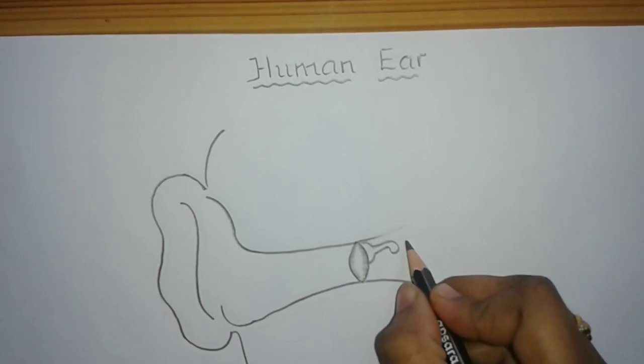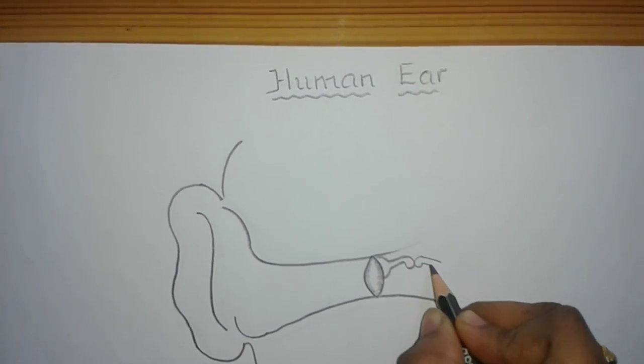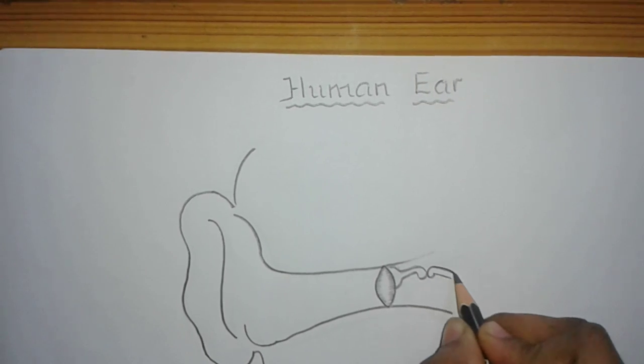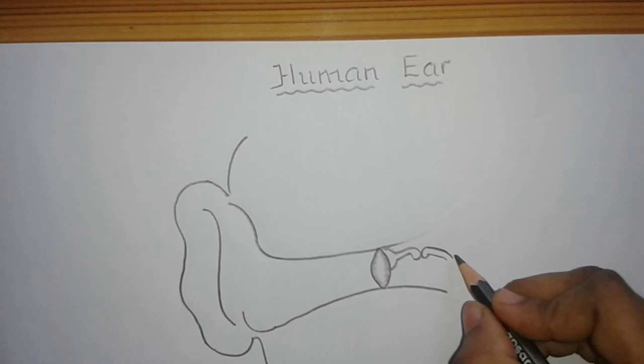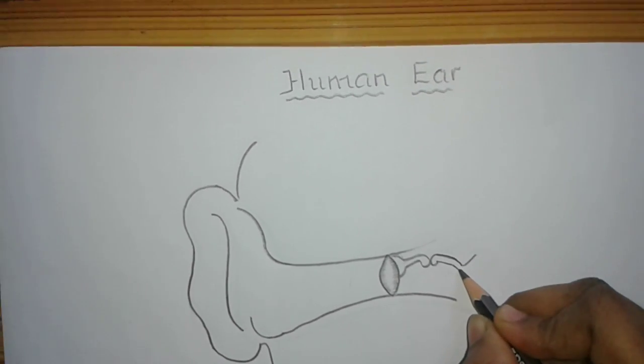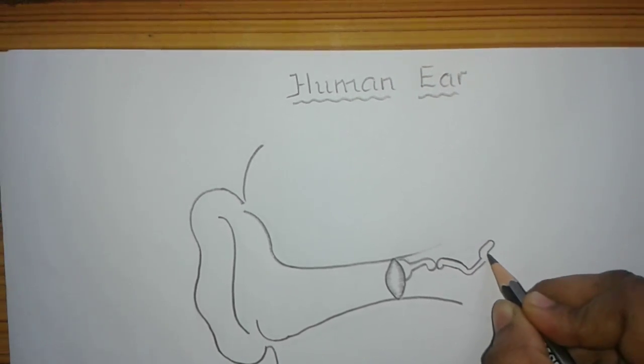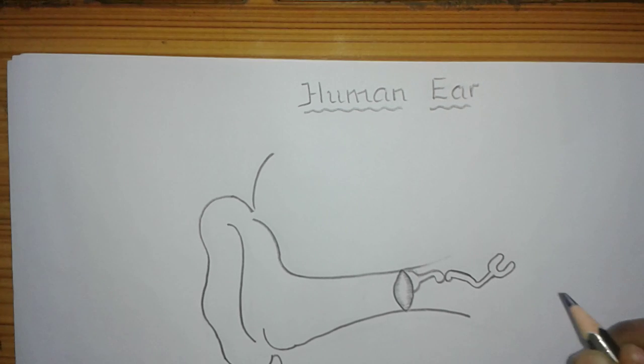The second smallest bone of the middle ear is incus, which is just opposite to the malleus. So draw the structure like this. The third smallest bone is called stapes, it is called stirrup. Draw the small third bone of the middle ear like this.